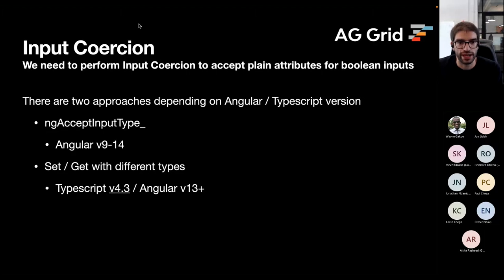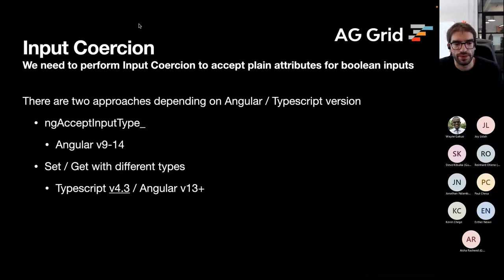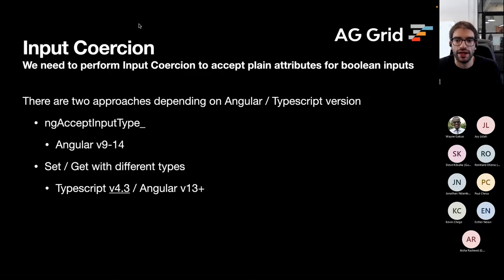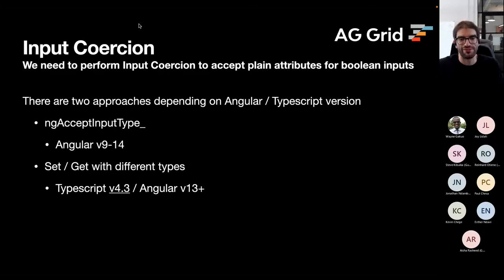Input coercion is what we need to support plain attributes for boolean inputs. There are two approaches depending on your Angular and TypeScript version. For Angular versions 9 to 14, there's a static property called ngAcceptInputType underscore followed by the property name. With Angular 13, TypeScript 4.3 came out and setters and getters are now allowed to have different types. We'll look at both approaches since many applications are still between versions 9 to 12.